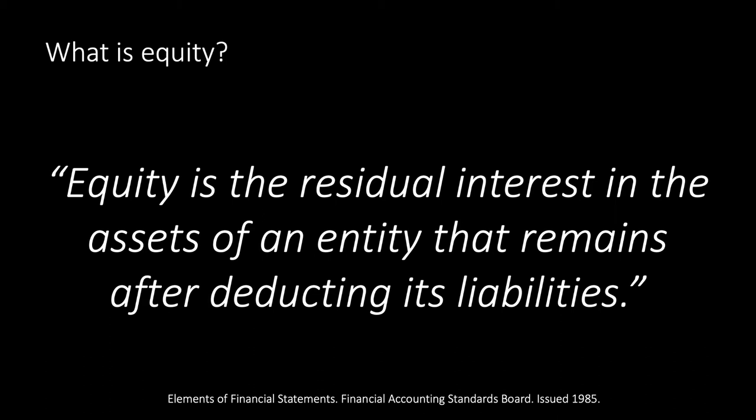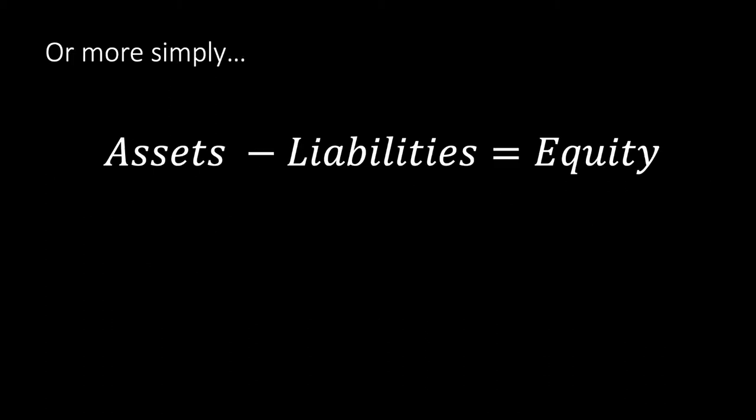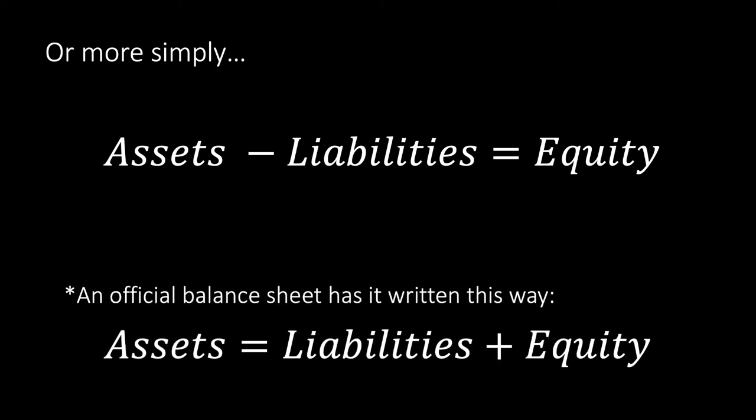So then what is equity? The FASB defines it as the residual interest in the assets of an entity that remain after deducting its liabilities. So assets minus your liabilities equal your equity might be an easy way to explain it. This is a common way that's used in the book Rich Dad Poor Dad by Robert Kiyosaki. But when you see an official balance sheet produced by a business, you're going to see it written the other way: assets equal to liabilities plus equity.